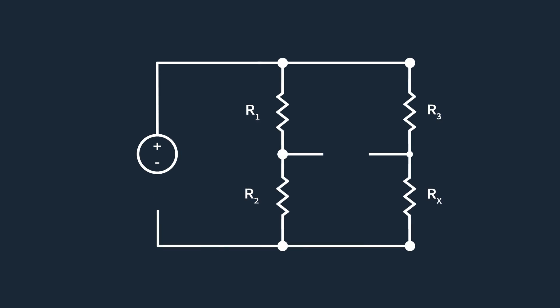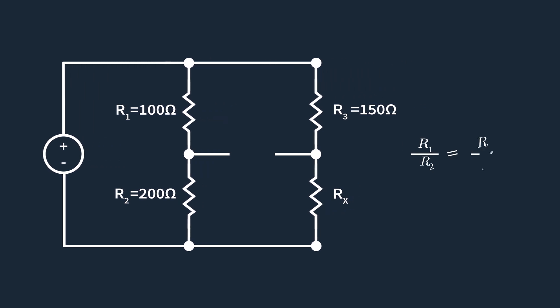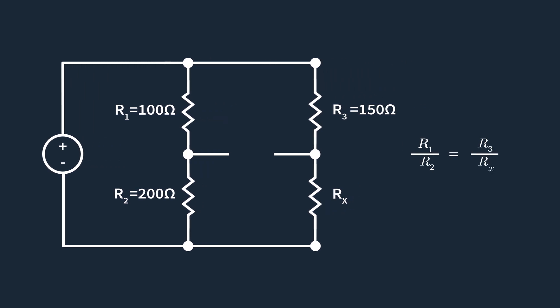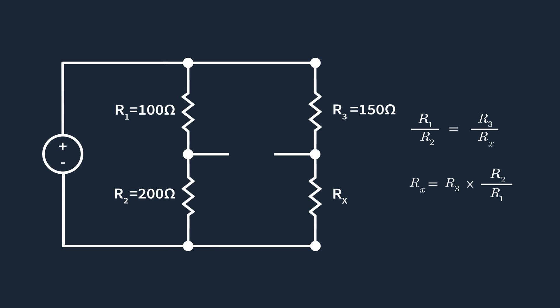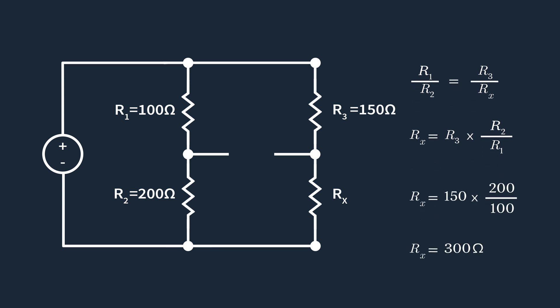Consider a typical Wheatstone bridge with known resistances R1, R2, and R3. If the bridge is balanced, what is the value of Rx? We're given that R1 equals 100 ohms, R2 equals 200 ohms, and R3 equals 150 ohms. Using the Wheatstone bridge formula, R1 divided by R2 equals R3 divided by Rx, meaning Rx equals R3 multiplied by R2 divided by R1. Substituting the values, we get Rx equal to 300 ohms.